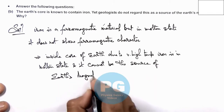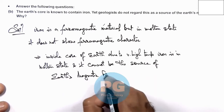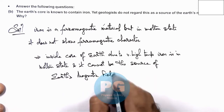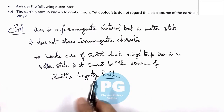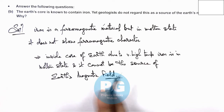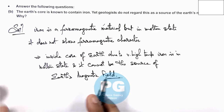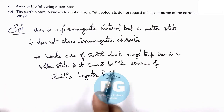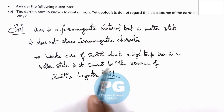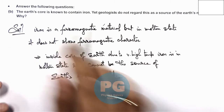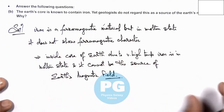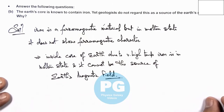Iron cannot be the source of Earth's magnetic field. Because Earth's magnetic field, if it is due to a magnet, then it must have some ferromagnetic character or some circulating charged particles due to which it is there. So the ferromagnetic character of iron is not present in molten state, that's why it is not considered as the source of Earth's magnetism.